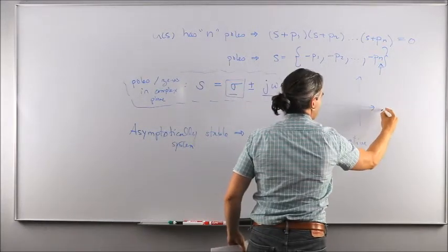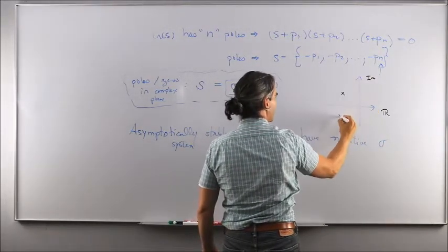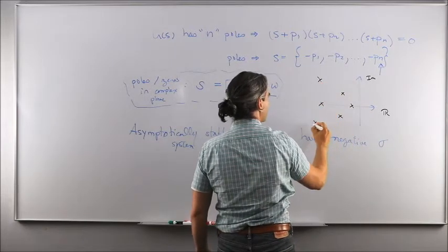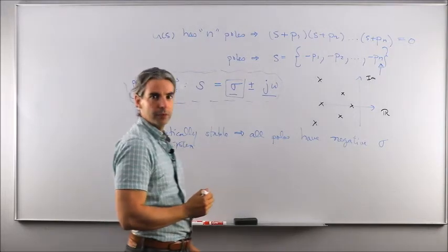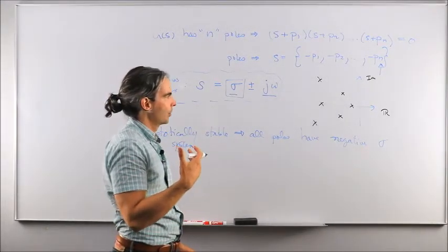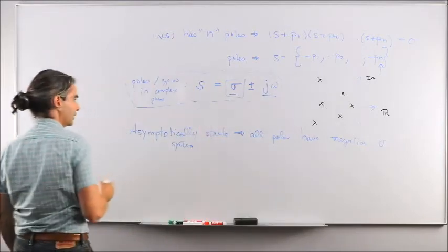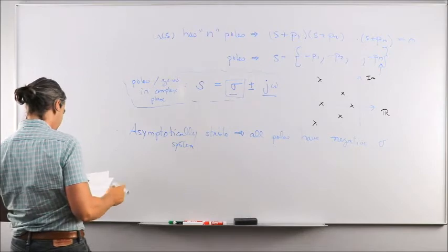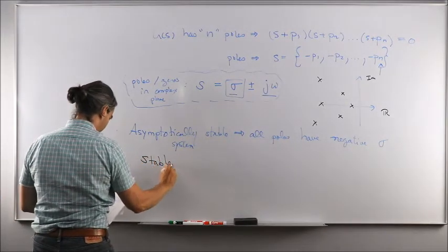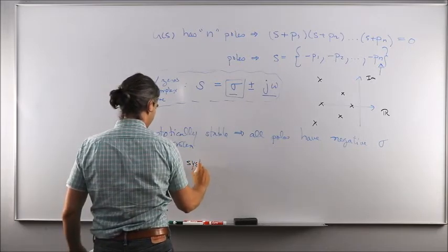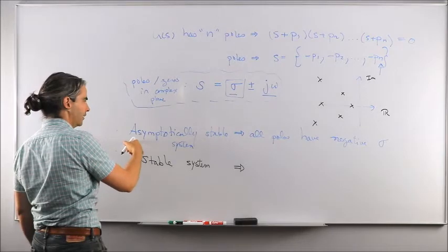We have the real axis and the imaginary axis. If all poles are on the left-hand side of the complex plane — poles here, poles there — that situation means the system is asymptotically stable. When perturbed, it gets back to equilibrium asymptotically. Now, a stable system is different from an asymptotically stable system.